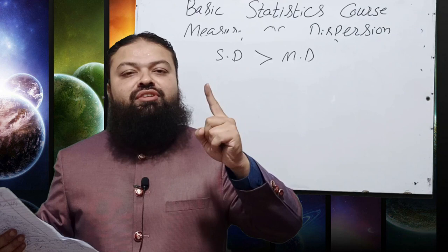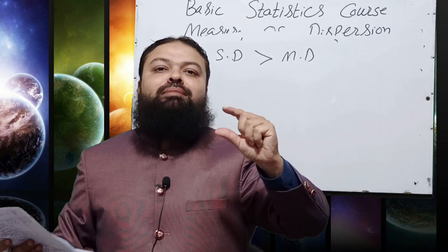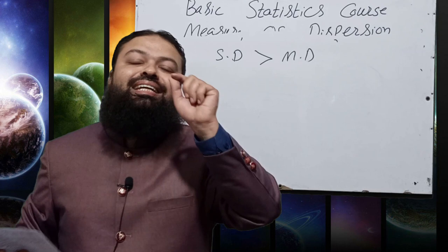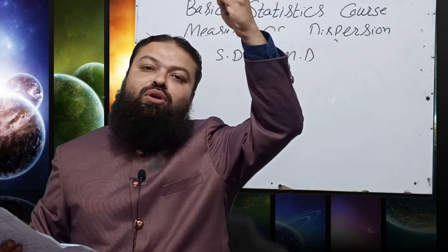Question number 9: Which measures of dispersion depend on all the observations of the data? (a) standard deviation — yes, (b) mean deviation — yes, (c) coefficient of variation (= s/x̄ × 100, where x̄ depends on all values) — yes, (d) all of the above. The correct answer is (d): standard deviation, mean deviation from mean, and coefficient of variation all depend on all values of X.